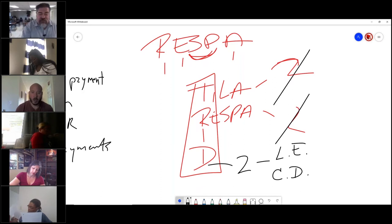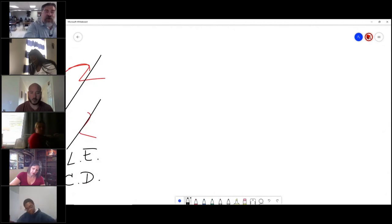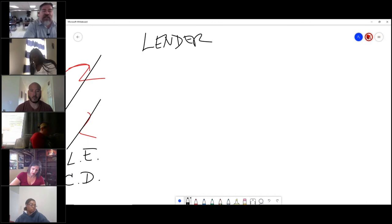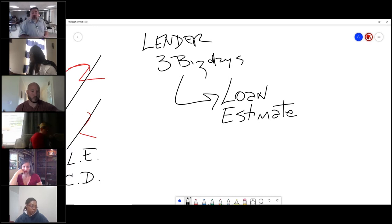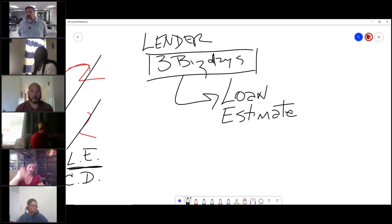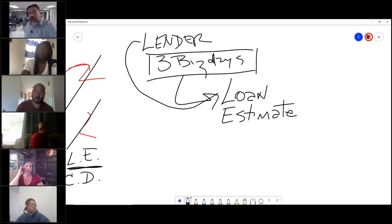The loan estimate form deals with when a consumer goes into a lender and makes an application for a loan. The lender has three business days to get that consumer the loan estimate, hence the word or the slang term you see it called LE.